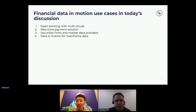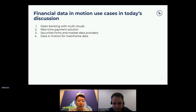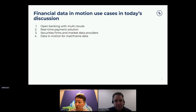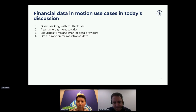Yesterday we had a session about rethinking financial services with data in motion, and today is a continuity — I'm going to go through a few actual use cases from APAC. The first is about open banking data sharing, a hot topic in the financial industry. The second is about real-time payment solutions — a lot of innovation in APAC, huge volume. The third case is about market data sharing in real-time and how security firms use data in motion.